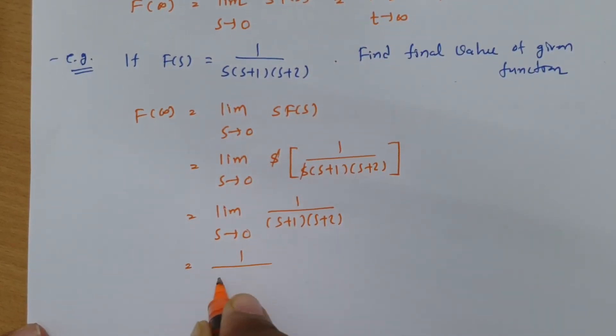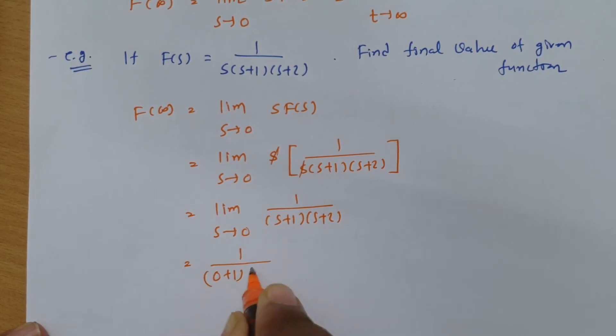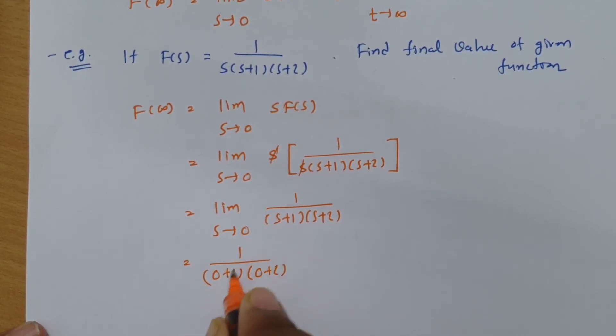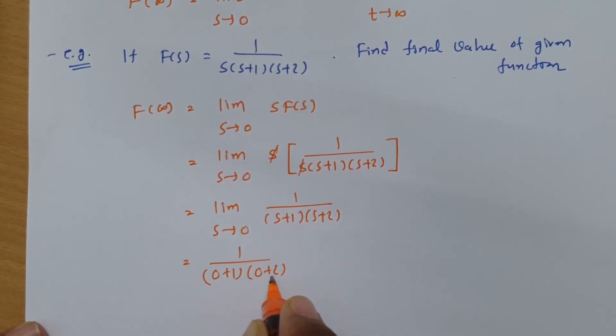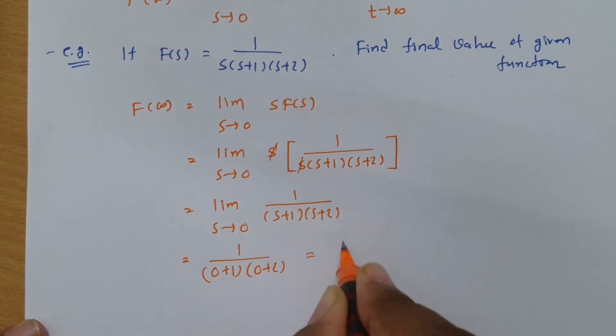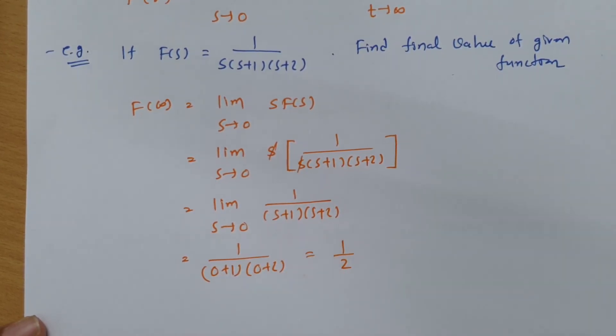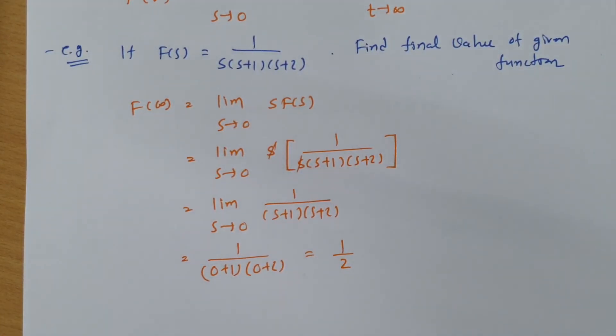This will be 1 divided by (0+1)(0+2). So this is 1 by 1 times 2, which is actually 1 by 2. So the final value of this function is 1/2.